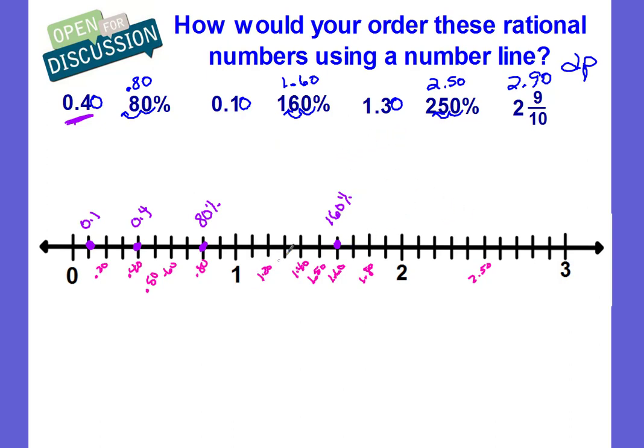Then I have a dollar thirty, which would go halfway between a dollar twenty and a dollar forty, it would go right here. And the original rational number form was one and three tenths. Two dollars and fifty cents I have labeled already, so I place the dot, and the original form is two hundred and fifty percent. My two dollars and ninety cents, that's ten cents less than three dollars, so it goes right here. And my original rational number form is two and nine tenths.